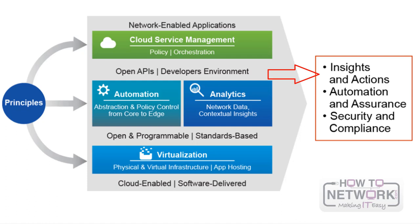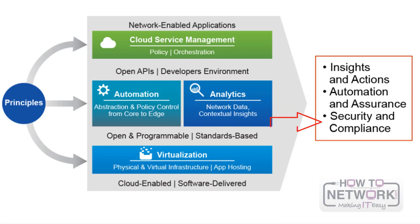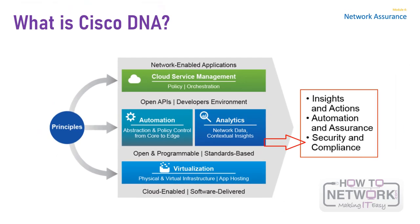First, insights and actions to drive faster business innovation. The architecture must not only manage the network, it must allow for the extraction of information related to network operations and end-user operations. Second, automation and assurance to lower IT costs and complexity while meeting business and user expectations. This is accomplished through device and network virtualization, automation of configuration, verification of quality of experience with assurance, and feedback into possible automation of changes. Third, security and compliance to reduce risks as the organization continues to grow and open up to mobility, cloud, and other technologies. This is accomplished through a centralized and automated tool which will maintain compliance at the scale of the entire network.